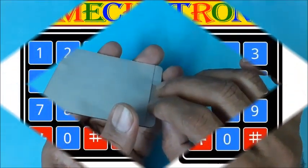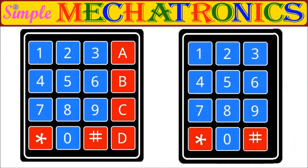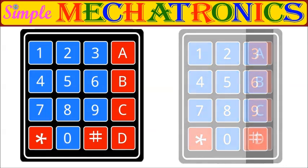The matrix keypads are normally available as 16 button, in 4 rows by 4 columns, and 12 button, in 4 rows by 3 columns.